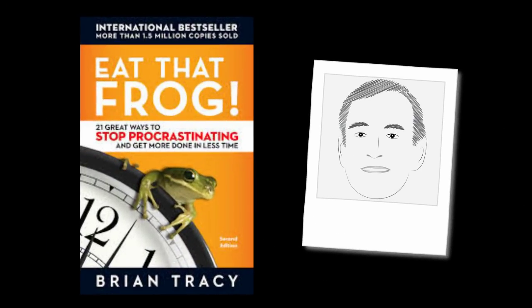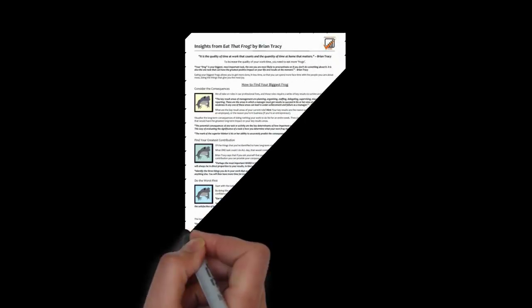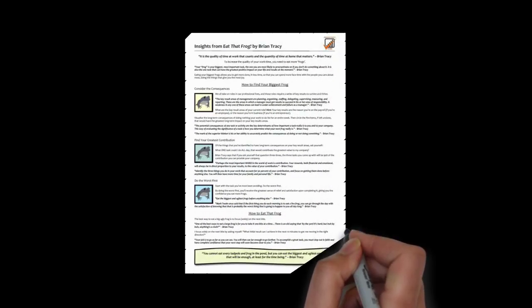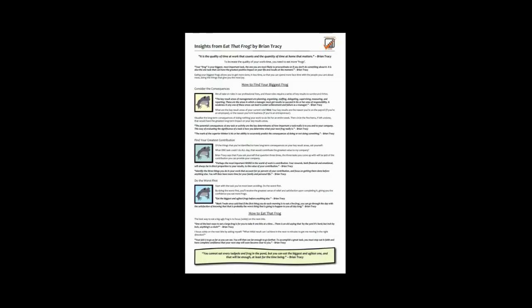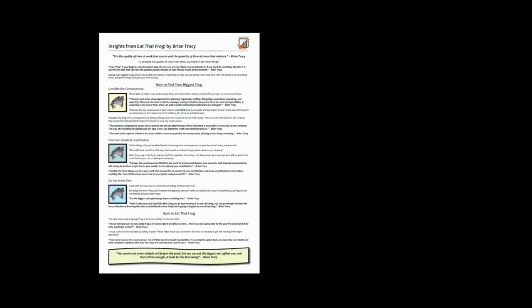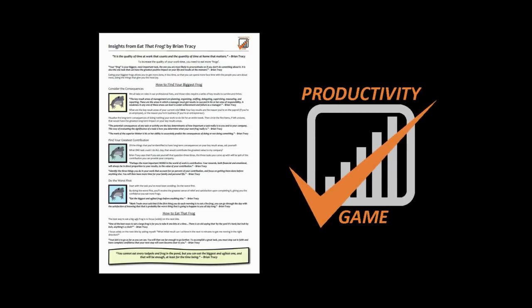That was the core message that I gathered from Eat That Frog by Brian Tracy. It's a great book on personal productivity that I highly recommend. If you would like a one-page PDF summary of insights that I gathered from this book, just click the link below and I'd be happy to email it to you. If you already subscribed to the free Productivity Game email newsletter, this PDF is sitting in your inbox. Thanks for watching and I hope you have a productive week.